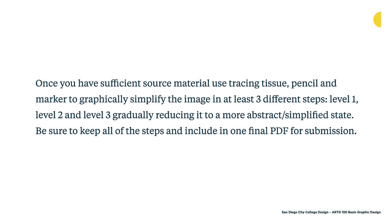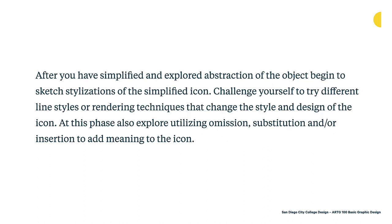Keep all of these steps because everything we're talking about needs to be in the final PDF for submission — the original image, all Photoshop work, and all sketches at the different levels. After you have simplified and explored abstraction, begin to sketch stylizations of the simplified icon. Challenge yourself to try different line styles or rendering techniques that change the style and design. At this phase, also explore utilizing omission, substitution, and insertion to add meaning to the icon. We want you to create options that explore stylization and adding meaning through these concepts. Remember to focus on shape — use omission, substitution, or insertion to create that meaning.